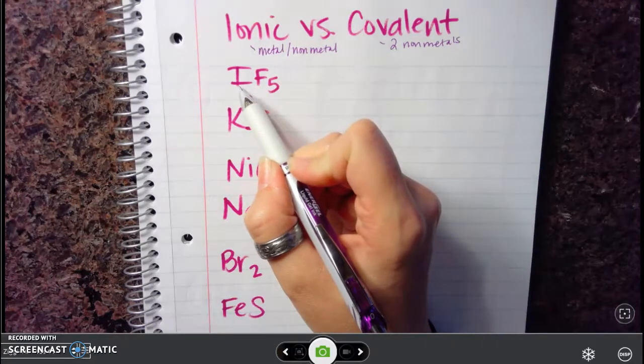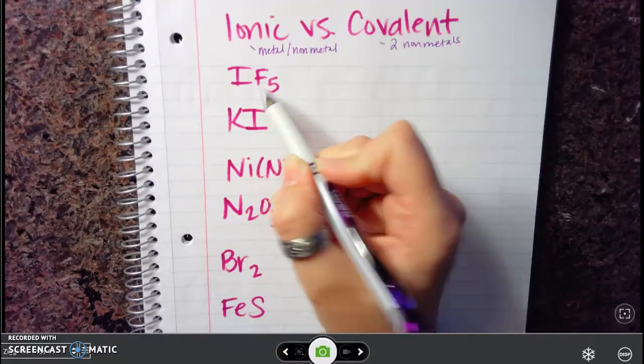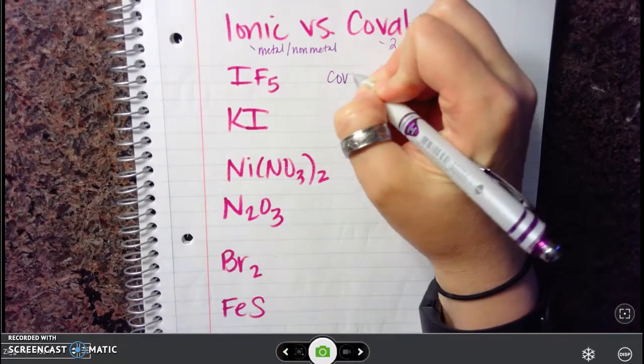So when you find iodine on the periodic table, iodine is a non-metal. Fluorine is a non-metal as well. So this one is covalent.